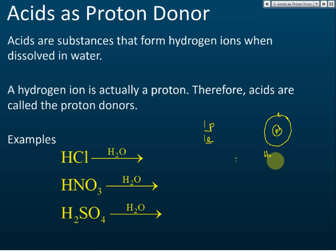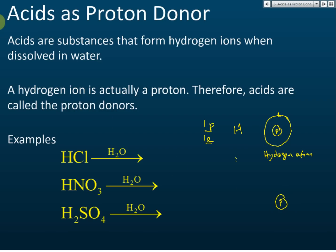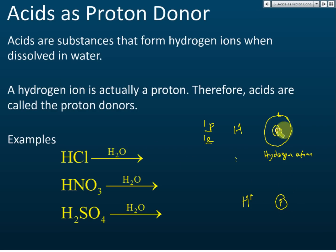This is a hydrogen atom. When this hydrogen atom throws away its electron, there is no more electron — just the proton only. Hydrogen atom has both a proton and an electron, but if it throws away the electron, only the proton remains. The charge becomes positive, and this is the hydrogen ion. So a hydrogen ion is actually just a proton.